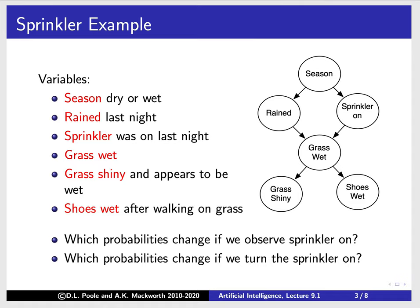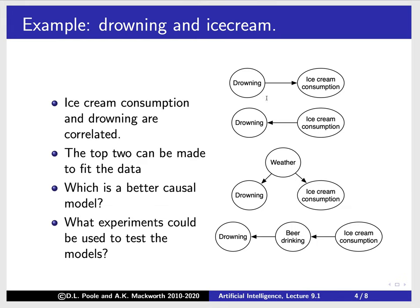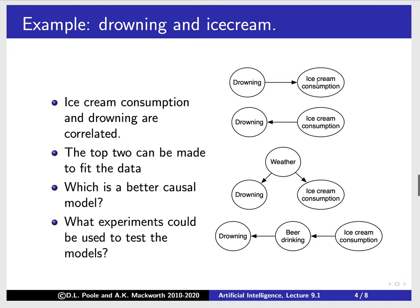Which probabilities change if we observe sprinkler on, and which probabilities change if we turn the sprinkler on — these are different things, and we're going to be able to model both. Here's a famous example: ice cream consumption and drowning are correlated. If you look at statistics across different places, there's a strong correlation between ice cream consumption and drowning. You might wonder why. One model: drowning causes ice cream consumption — pretty implausible. Another: ice cream consumption causes drowning. By the way, these two cannot be distinguished by observing the world — observations are not enough.